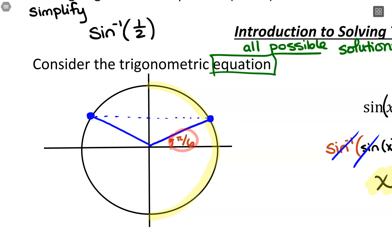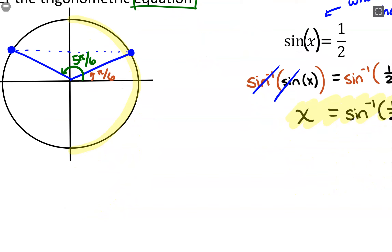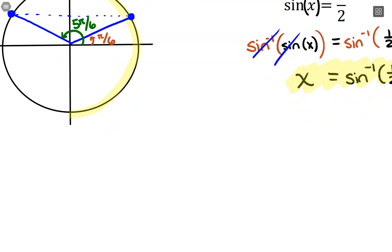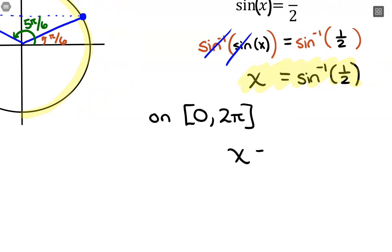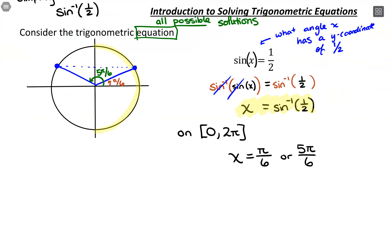These angles relate together. We're dealing with pi/6, and by symmetry we get a second angle: 5pi/6. So within our unit circle, sticking to the range from 0 to 2pi, the possibilities for x are: x can equal pi/6, or x can equal 5pi/6. Those are two possible solutions within that range.